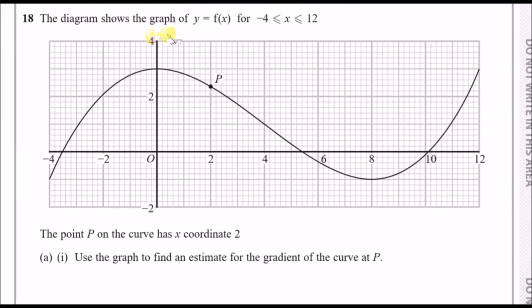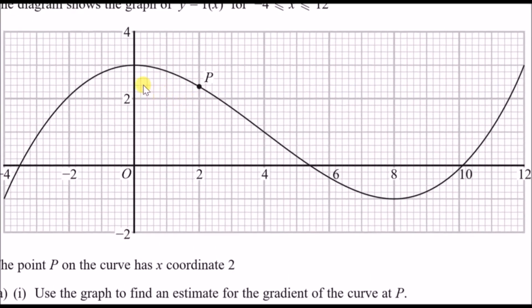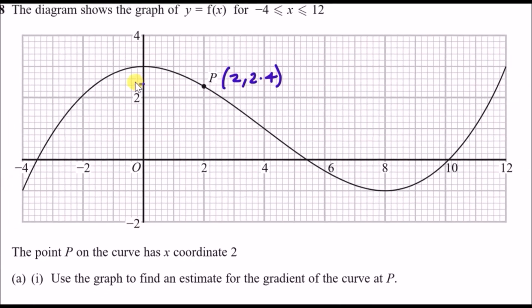The diagram shows the graph of y equals f(x) for x between minus 4 and 12. This looks like a cubic graph and they've got point P over there. The point P on the curve has x-coordinate 2. If we zoom in carefully, this should hit at 2.4. So the coordinate here is 2 and 2.4.